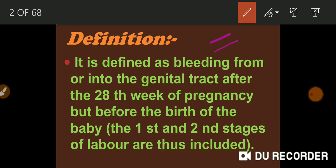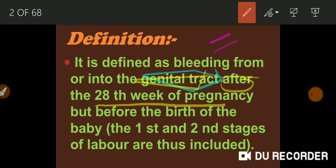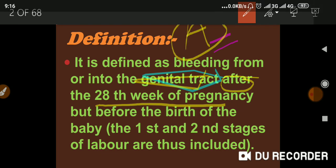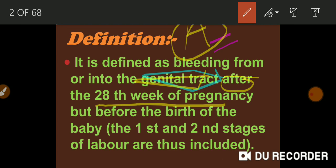Let's start with the definition. It is defined as bleeding from or into the genital tract after the 28 weeks of pregnancy. Now I have used this word 'after the 28 weeks of pregnancy' because this is antepartum hemorrhage. When I studied bleeding in early pregnancy, we studied this before the 28 weeks of pregnancy. If a woman comes with the complaint of bleeding into the genital tract after 28 weeks, you have to understand that this is antepartum hemorrhage.